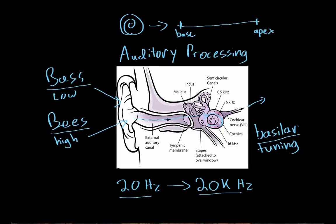The base would be right here and the apex would be right here. If we unrolled it and looked at which hair cells were activated given different sounds, we would notice that hair cells at the very base of the cochlea are activated by very high frequency sounds, and hair cells at the very apex of the cochlea are stimulated by very low frequency sounds.